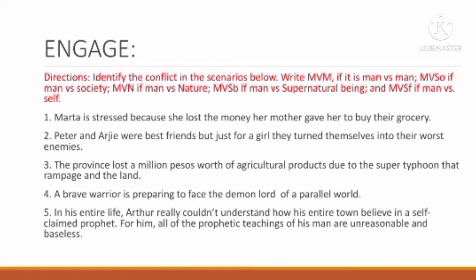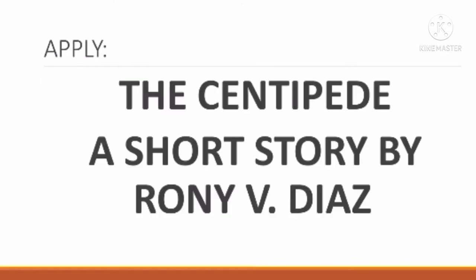Number five: In his entire life, Arthur really couldn't understand how his entire town believed in a self-claimed prophet. For him, all of the prophetic teachings of this man are unreasonable and baseless. Answer: Man versus self — MVSF.